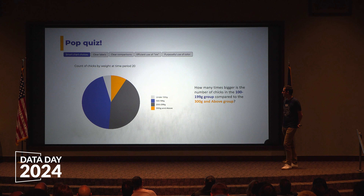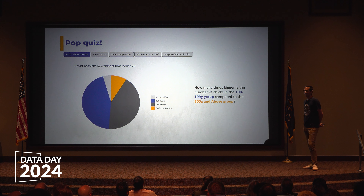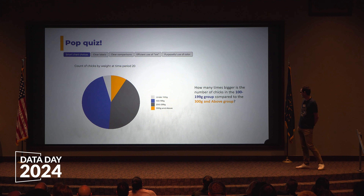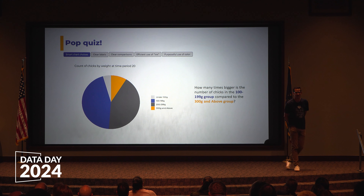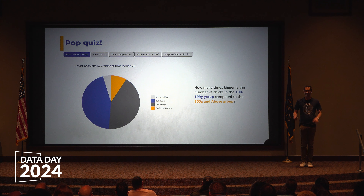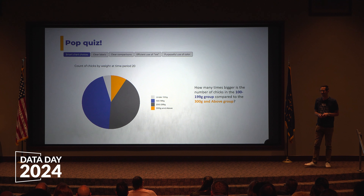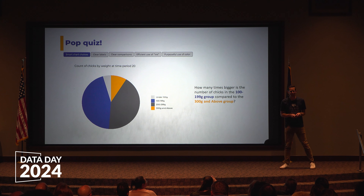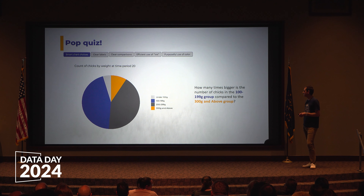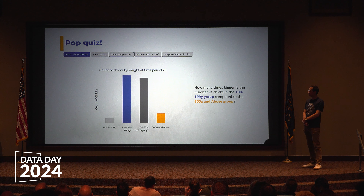The first characteristic is smart chart choices, and we're going to start with a pop quiz. Looking at this pie chart, how many times bigger is the number of chicks in the 100 to 199 gram category in blue than the 300 and above group in yellow? Take a look, maybe jot down the number of times larger you think that is. Make a note on your phone or just stick it in your brain somewhere.